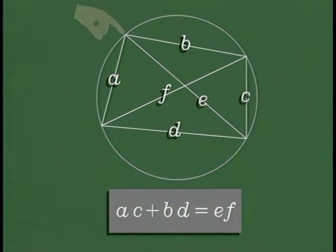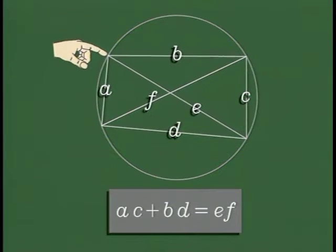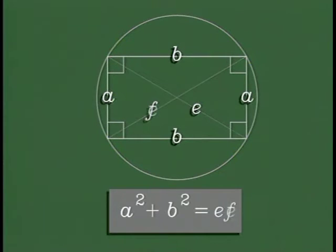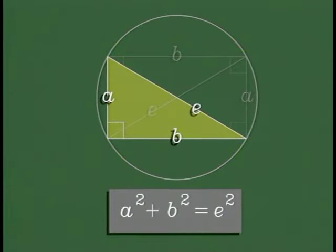Let's see what happens when the quadrilateral is a rectangle. These two opposite sides have equal length, these two opposite sides have equal length, and the two diagonals have equal length. Surprise! Ptolemy's theorem becomes the Pythagorean theorem for right triangles: the sum of the squares of the legs is equal to the square of the hypotenuse.